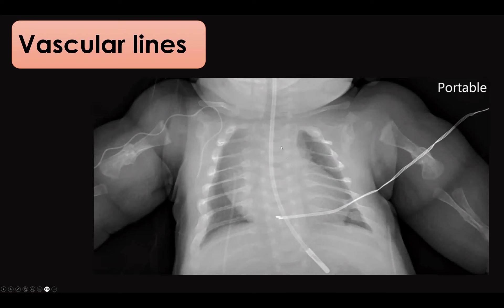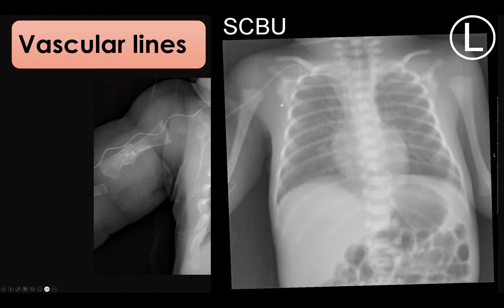Another example shows a right upper limb PICC line going to the subclavian vein, then descending abnormally — going to the right axillary region, possibly in an articular branch. This is in abnormal position. The case is in a patient with osteogenesis imperfecta, with multiple fractures visible in the ribs and long bones. Another example shows the same abnormal pathway.